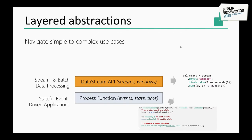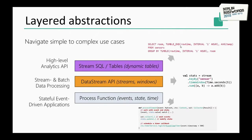It gives you more fine-grained control. And there is a high-level abstraction that eases the entry level into stream processing: a stream SQL and Table API that basically allows data analysts to write SQL queries that will then be translated into a stream processing program and run on Flink.